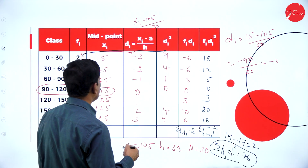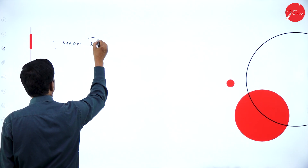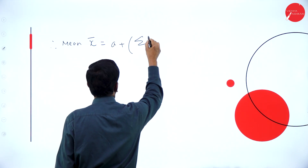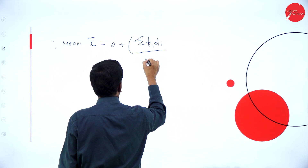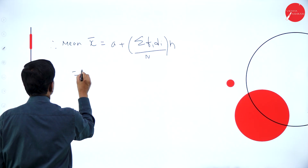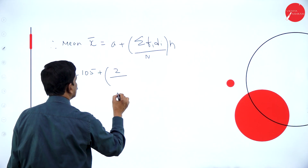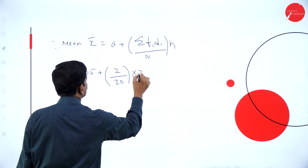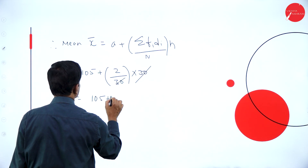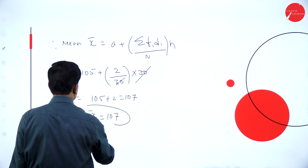Now the mean is equal to: therefore x-bar equals A plus sigma fi di divided by n into h. What is A? Assumed mean is 105, plus sigma fi di which is 2, divided by n which is 30, into h which is also 30. The 30s cancel, giving 105 plus 2, which is equal to 107. Therefore the mean x-bar is equal to 107.